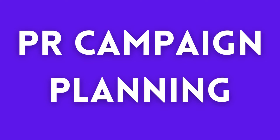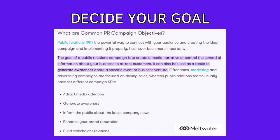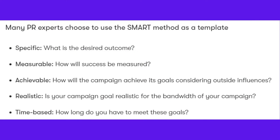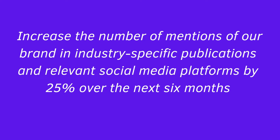So what's involved in the planning? Here's a simplified explanation of the steps involved. Firstly, identify your goal — what do you want to achieve with your PR campaign? It could be increasing awareness of your brand, raising hype for the launching of a new product, improving your reputation, etc. You can use the SMART goals formula for help planning your goals. An example of a goal that follows this structure is: increase the number of mentions of our brand in industry-specific publications and relevant social media platforms by 25% over the next six months.